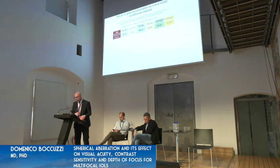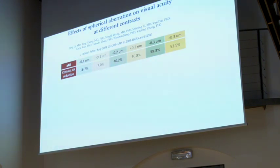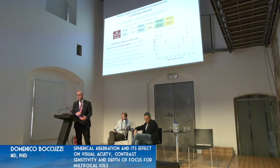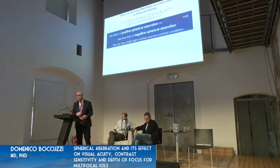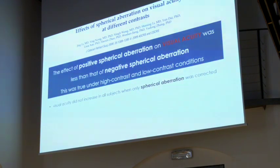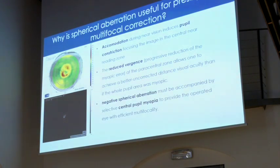In a 2009 paper, the effects of spherical aberration on visual acuity at different contrasts were described. When all aberrations were corrected, contrast visual acuity decreased by 7%, 36.8%, and 53.5% after induction of positive spherical aberration. Negative spherical aberration had a greater effect on visual acuity than positive, true for both high and low contrast conditions. Visual acuity does not improve by correcting only spherical aberration — it improves when all high-order aberrations are corrected.